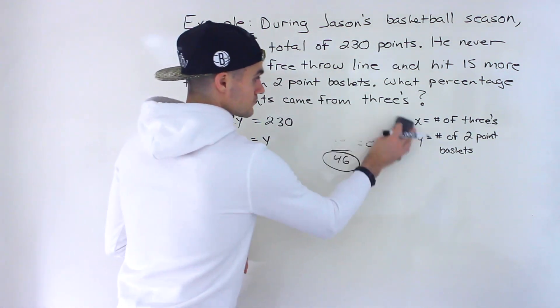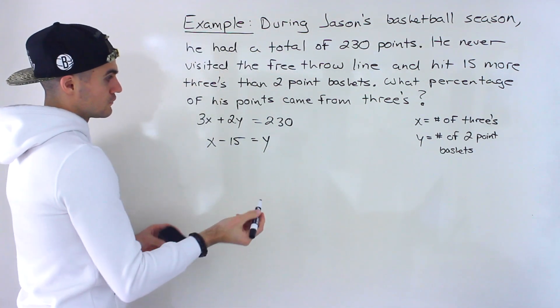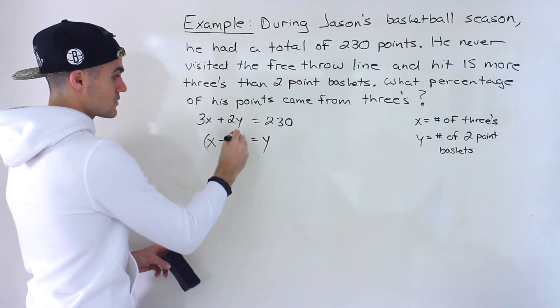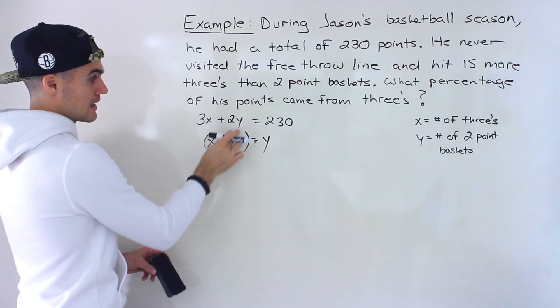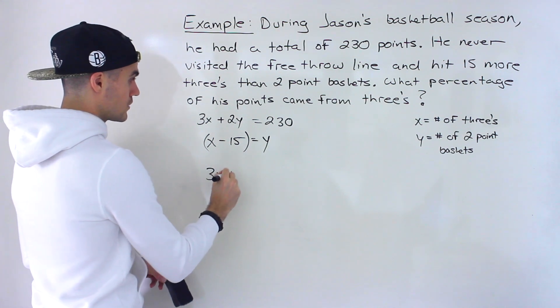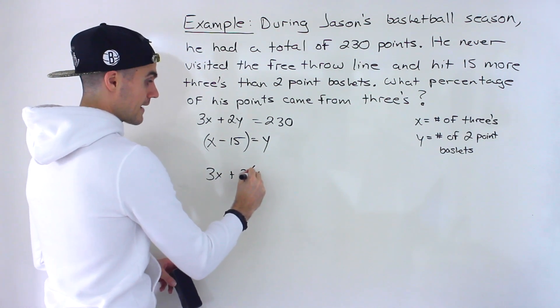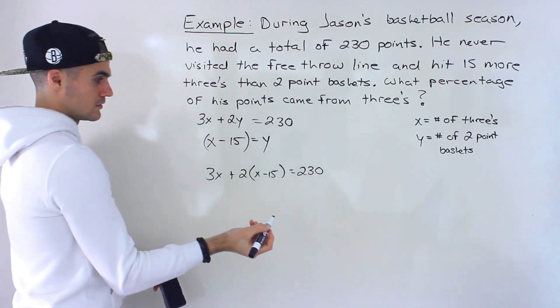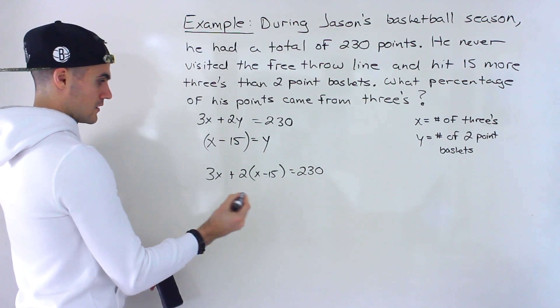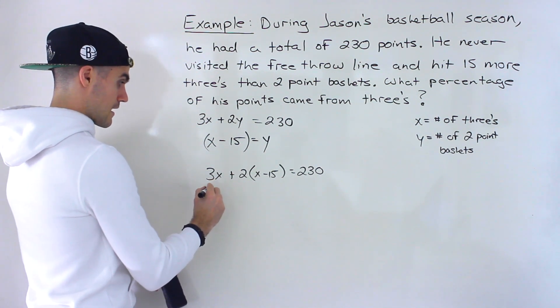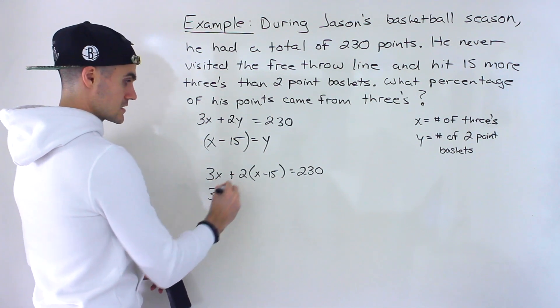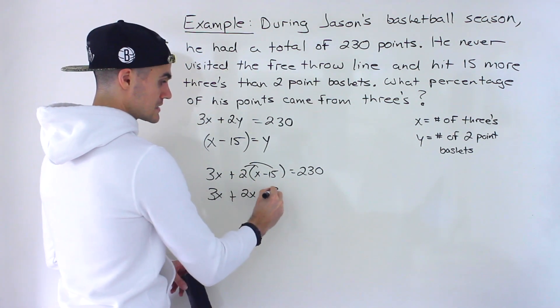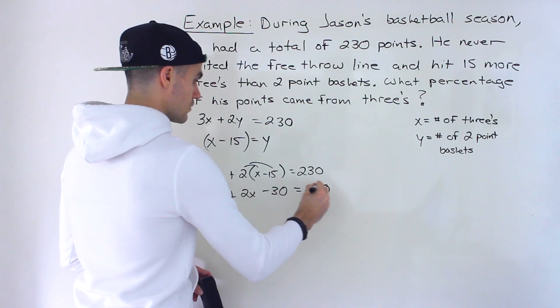And now, at this point, we can just solve. We have two equations, two unknowns. Notice the y is already isolated. So I'm actually going to just take this and plug it in for the y using substitution. So we'll have 3x plus 2 bracket x minus 15 is equal to 230. So this we would have 3x. Now this, we've got to distribute. So 2 times x is 2x, and then 2 times negative 15 is negative 30 is equal to 230.